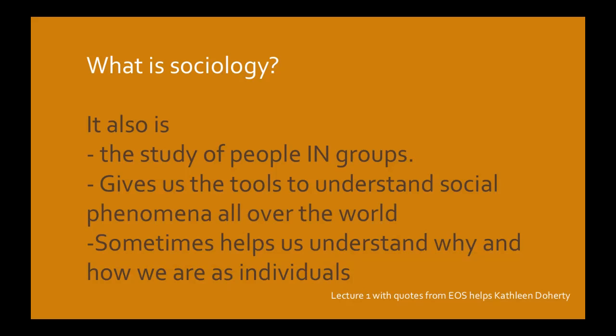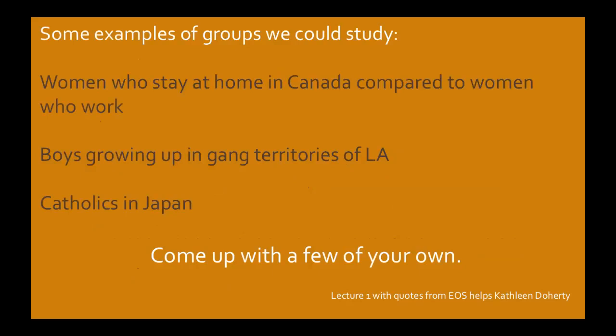Sociology also helps us understand why and how we are as individuals. Even though it's about groups, you'll become more aware of how things were shaped for you, how you were socialized as a child or by communities. When we make these discoveries, we recognize our own bias and sometimes struggle with what we're looking at because of that bias. We then learn how to set that bias aside to use statistics, data, and overall observation to see what's scientifically going on.